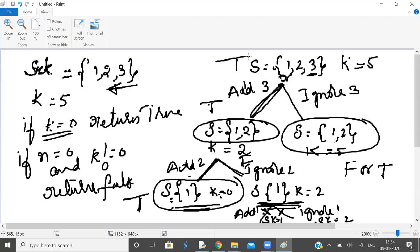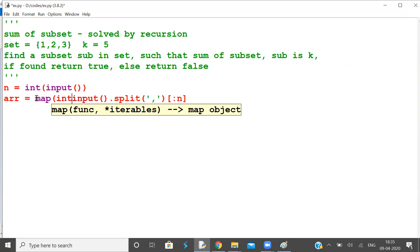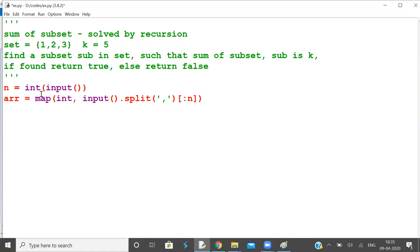So let's see how this is implemented. First, read the number of elements of the set. It could be a set or a list, so let us call this a list. Now read the list. The elements may be space separated or comma separated. For a change let's take comma separated values - n values. Because they are strings, you map them as integers and make it a list.